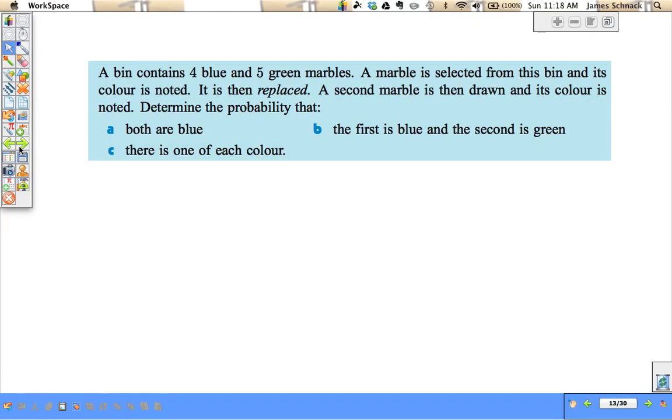So it's really fairly straightforward, but you just have to pay attention to whether or not you're putting the object back, in which case the second pick is independent of the first one, or if you're not putting it back, then the second pick is dependent on the first one.